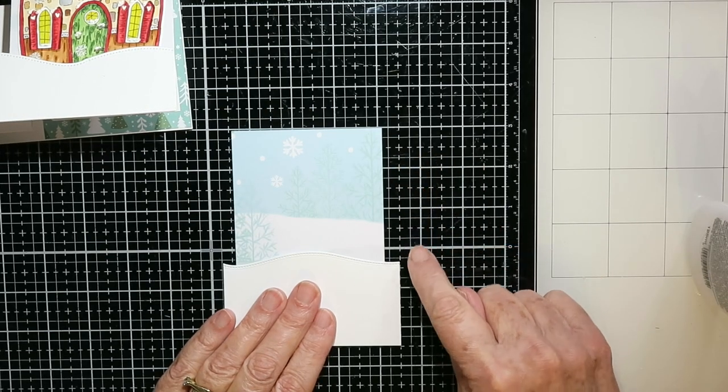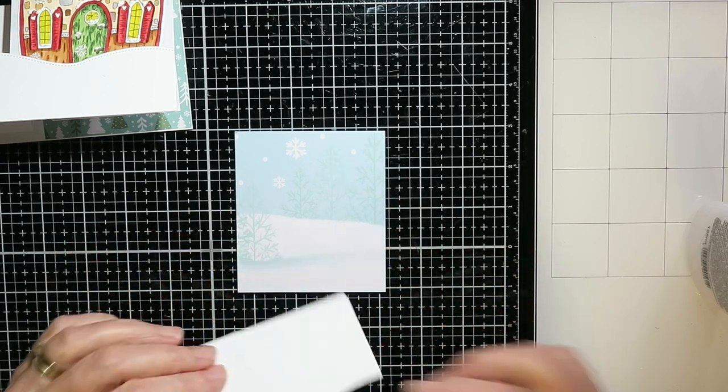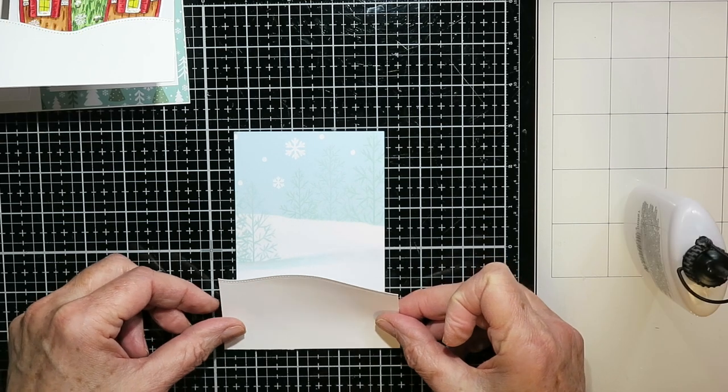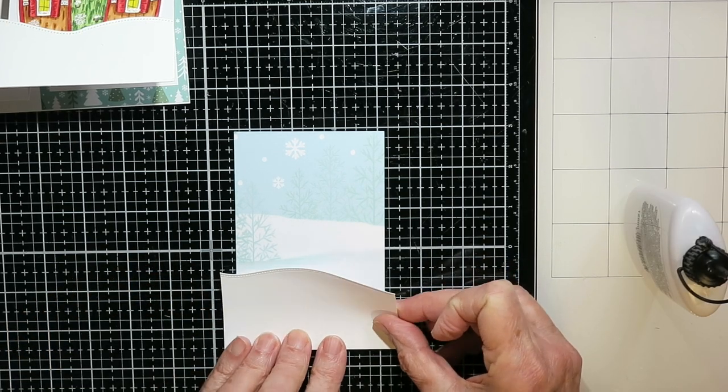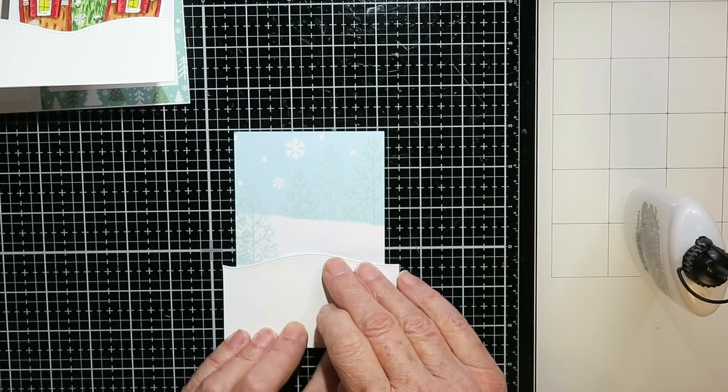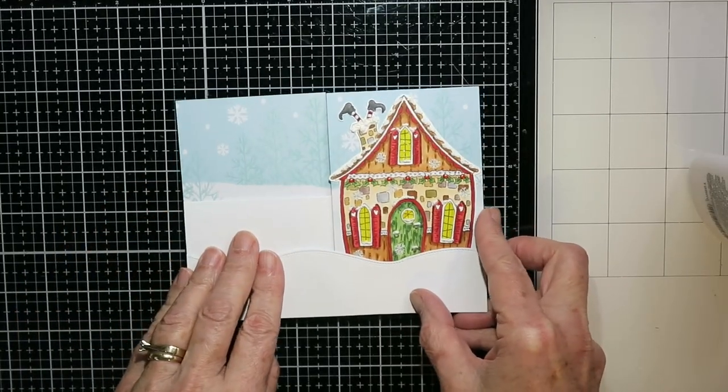And now for this one, I know that this has to be five and a half inches tall. So I'm just going to put a little glue on the top of my snow bank and attach it so that my whole piece is five and a half inches tall. And then I will just trim off those excess sides. And so then it fits right in and lines up with the other one.